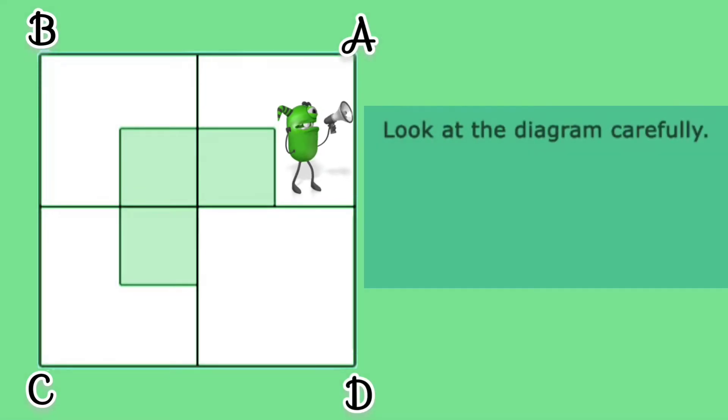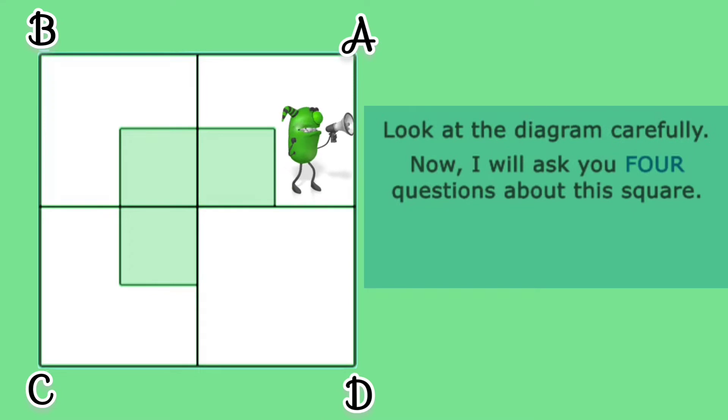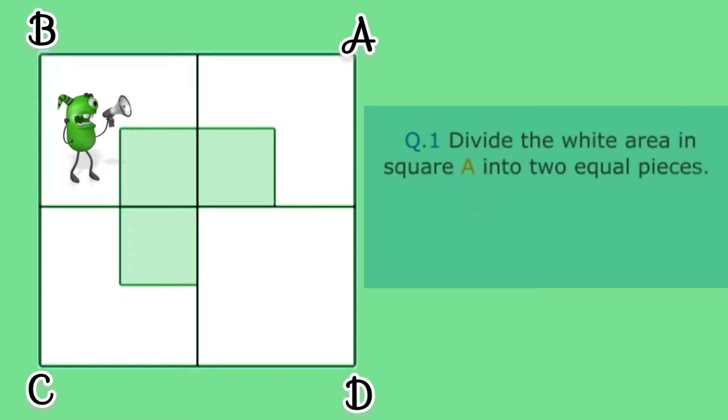Look at the diagram carefully. Now I will ask you four questions about this square. Are you ready? Question number one: divide the white area in square A into two equal pieces. Easy, isn't it?